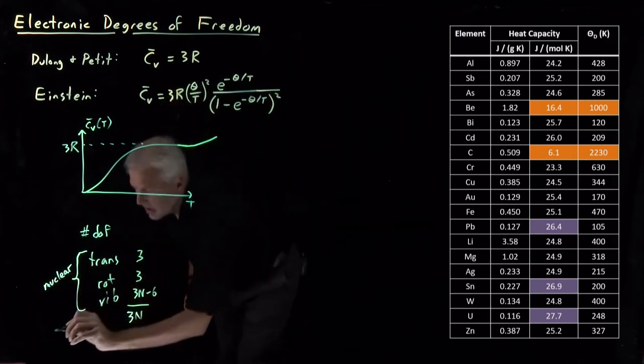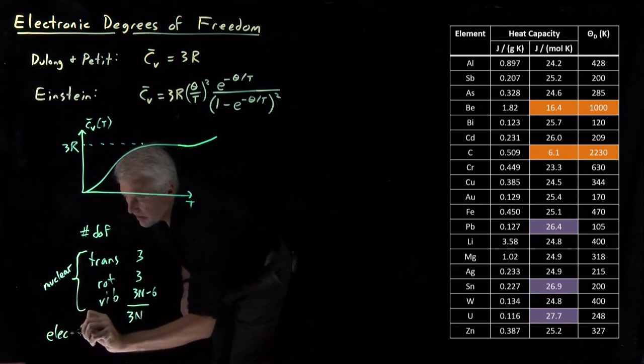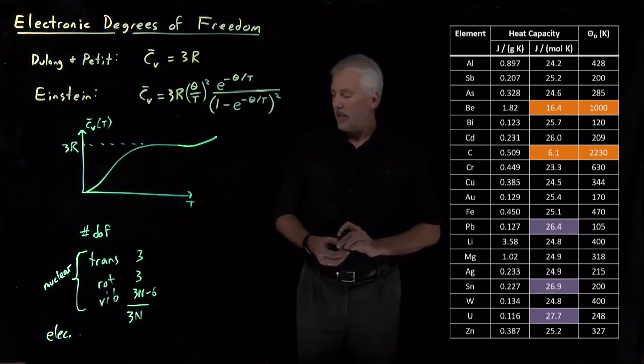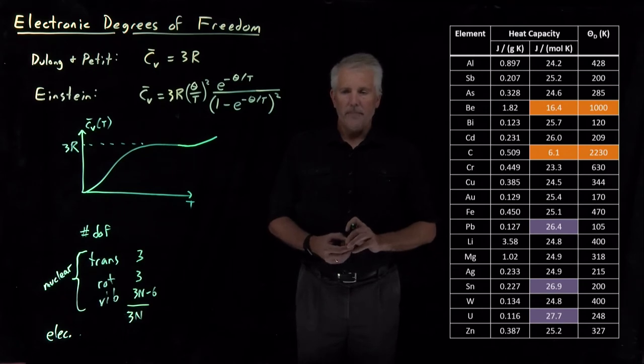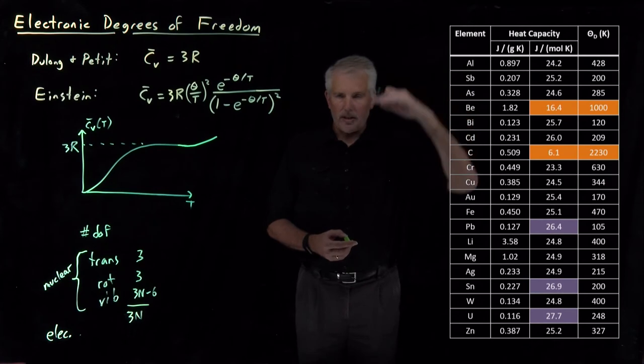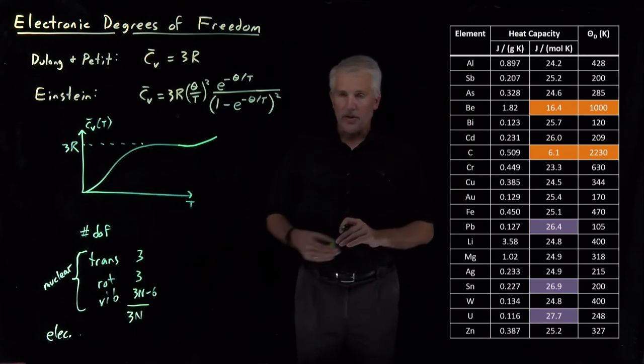There's also electronic degrees of freedom when the electrons are involved in the energetic excitations. So those electronic degrees of freedom, we've already seen those a little bit when we talked about spectroscopy. If I excite a molecule from one electronic state to another electronic state, those are excitations of the electrons.